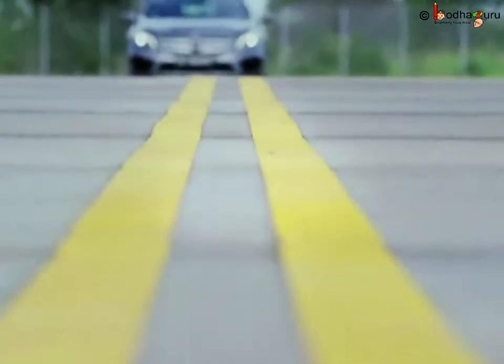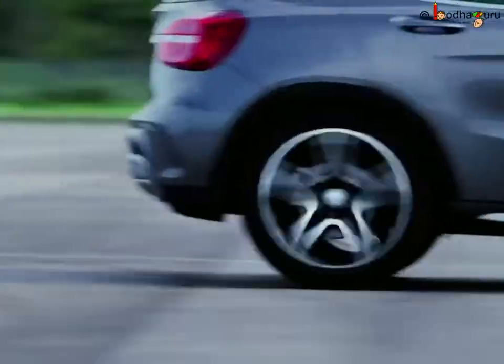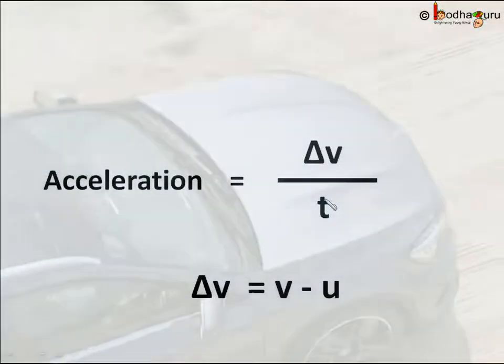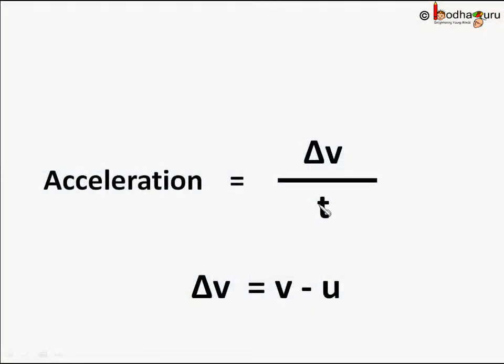Say a vehicle is accelerating in a straight line with constant acceleration. As we saw in the last lesson, acceleration a is equal to change in velocity by time taken.